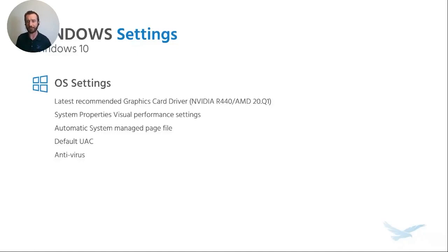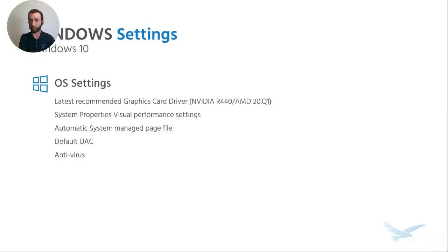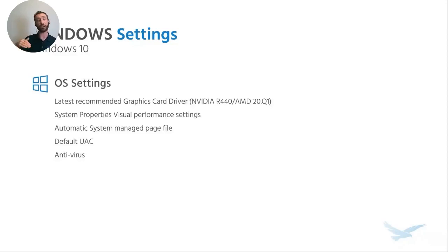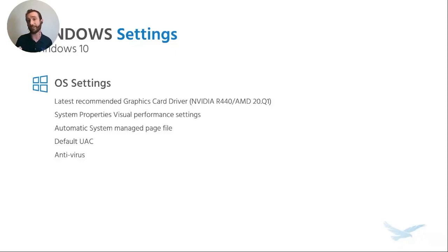The last OS item is UAC — User Account Control. If you search for UAC in Windows, you'll find it's a security mechanism. It should be set to the default, which is the third from the bottom setting. We've seen in some scenarios where if you've got it cranked all the way up to the top, it causes strange behavior with SOLIDWORKS. Try toggling it down one notch to the default and reboot your computer to see if performance improves.